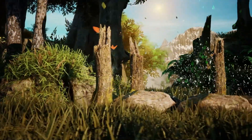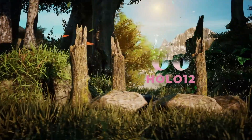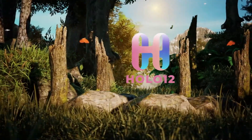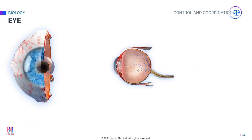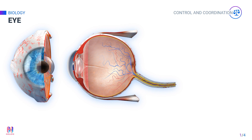Eyes are the sensory organs of the body that allow us to visualize the things around us and detect their color. This is possible because eyes detect visual signals via receptors that are sensitive to color and light.